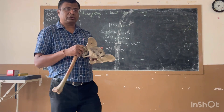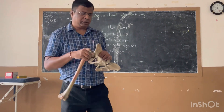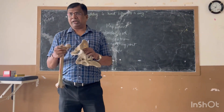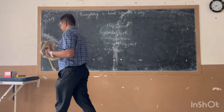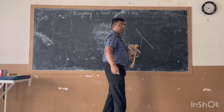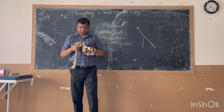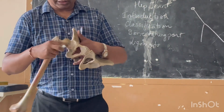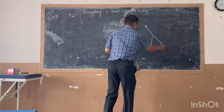The next and very important ligament is the iliofemoral ligament, which is the strongest ligament in the body. It is also called the ligament of Bigelow. It is an inverted Y-shaped ligament. The stem of the Y is attached to the anterior inferior iliac spine, and then it fans out into two limbs — an upper limb and a lower limb.